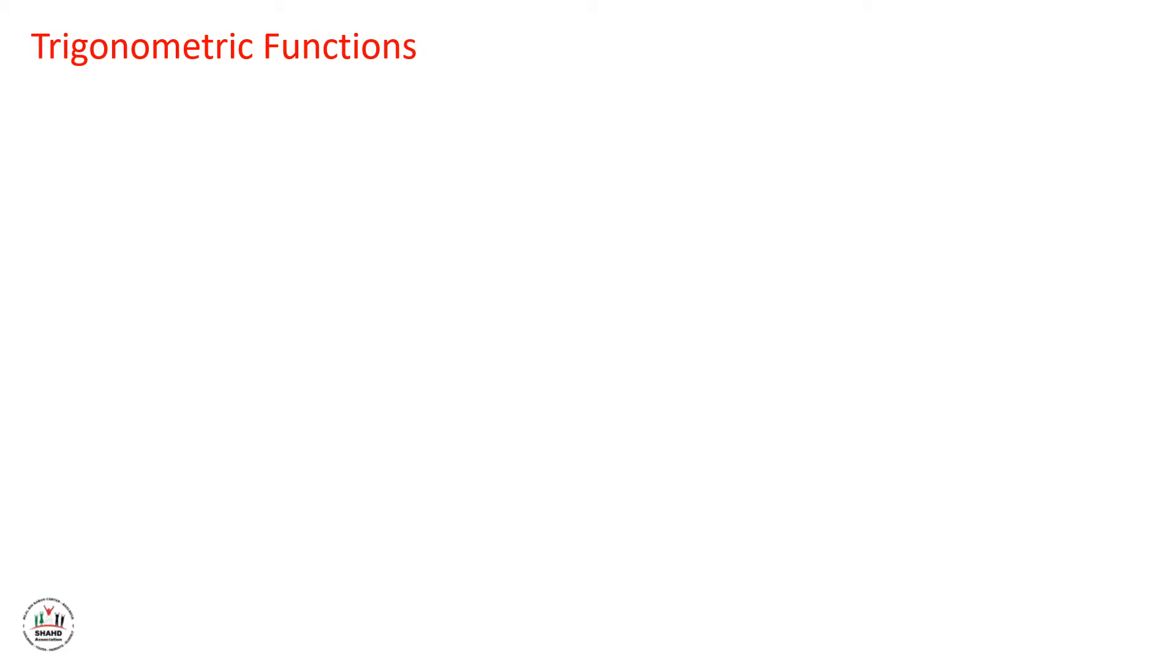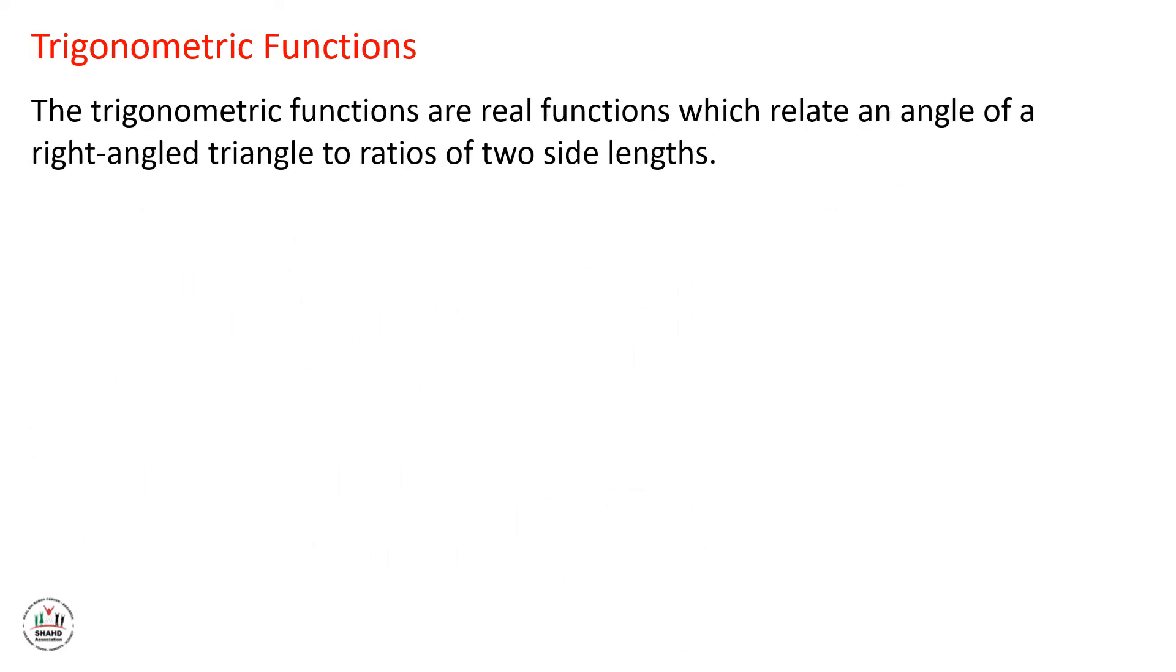Trigonometric functions. We have seen in the engage and explore section how we can find the opposite side for a certain angle and how we can find the opposite angle for a certain line and how to define the hypotenuse inside a right triangle. Now let's define the trigonometric functions. The trigonometric functions are real functions which relate an angle of a right angled triangle to ratios of two side lengths. This means that the following rules are only applied in case of a right angled triangle.